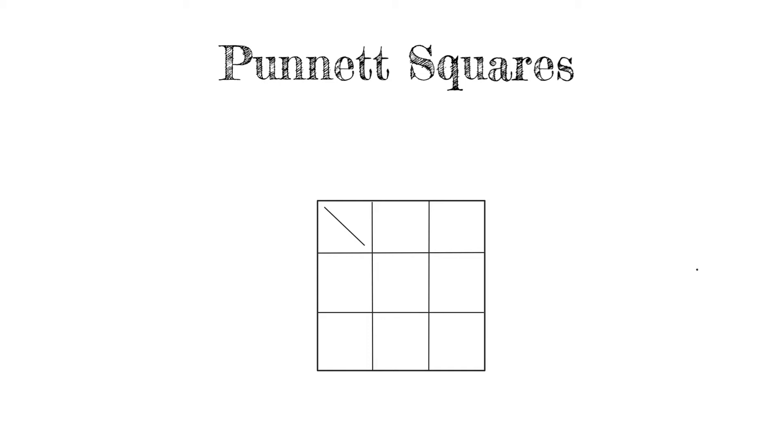Today we're going to be working with Punnett squares, and a Punnett square is essentially a grid with maternal genotype on one axis and paternal on the other.